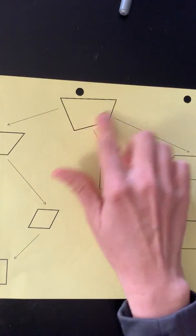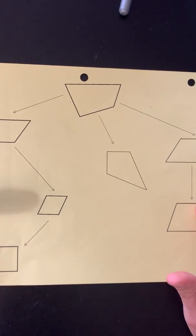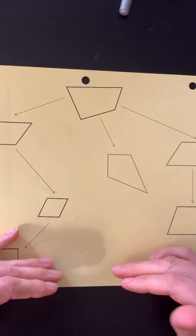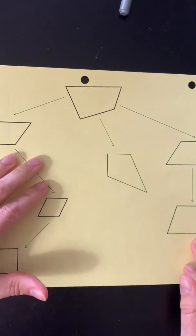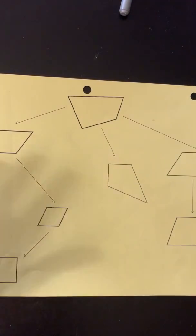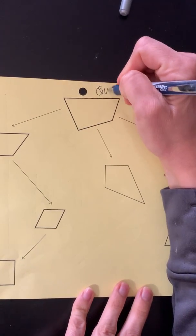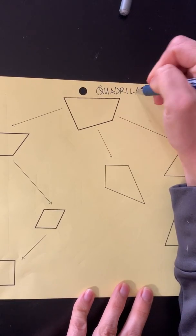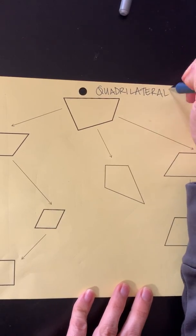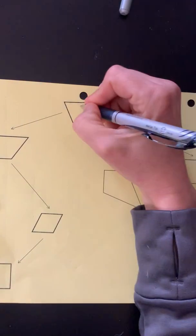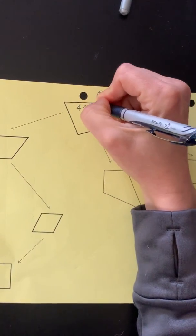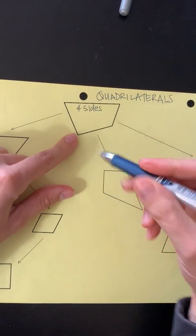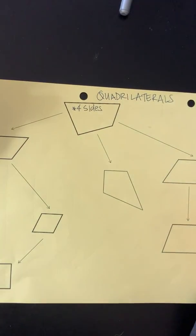We're going to start at the top, and this is almost like a family tree — the same way you'd show how you're connected to your grandma, grandpa, and uncles. It's that same idea. It's talking about all different types of quadrilaterals, so that's what goes across the top. A quadrilateral is essentially just a four-sided shape, so if you drew a haphazard four-sided shape it would probably be classified as a quadrilateral.